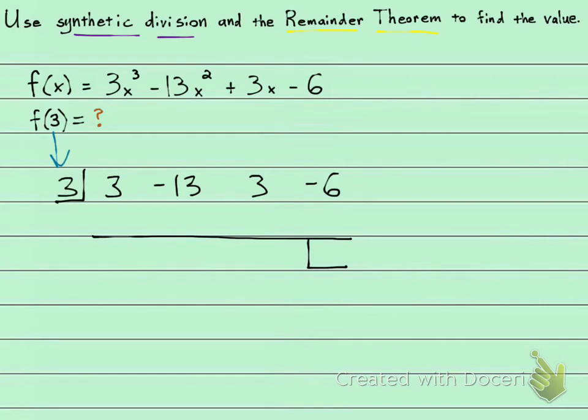Alright, and let's do synthetic division. The first term drops down. Then we multiply. 3 times 3 is 9. And then we combine. Negative 13 plus 9. That's negative 4. And then we multiply. Negative 12. And then we combine. That is negative 9. And then we multiply. Negative 27. And then we combine. And that's going to give us negative 33.